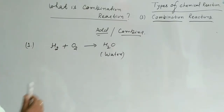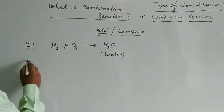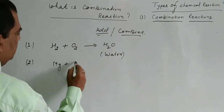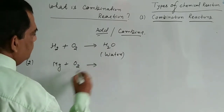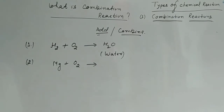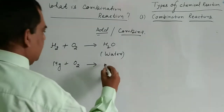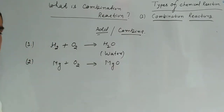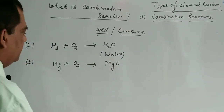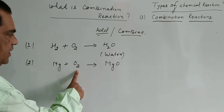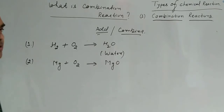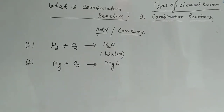Example number two: Mg plus O₂. When magnesium is burned in oxygen, what is formed? Magnesium oxide, MgO. Here also, magnesium combines with oxygen to form a single substance — magnesium oxide. So this is also a combination reaction.